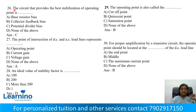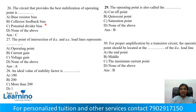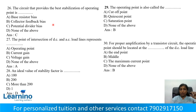Question number 26: The circuit that provides the best stabilization of the operating point — options include base resistor bias, collector feedback bias, Option C: Potential divider bias, Option D: None of them.